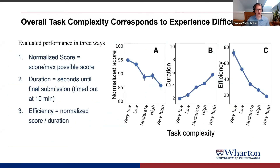As a manipulation check, we can show that as we vary task complexity, people respond as expected. The normalized score — the score divided by the maximum possible — decreases by about 50% of its total range as complexity increases. Duration increases substantially, from roughly two minutes for an easy task to six minutes for a very hard task. Efficiency, the ratio of score to duration, goes down quite a lot. This is exactly what you would expect for subjective complexity, and the fact that it varies so much is very helpful.